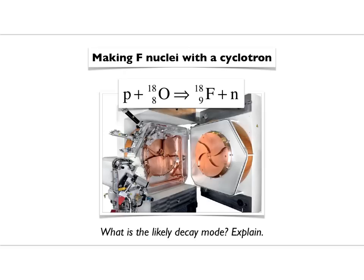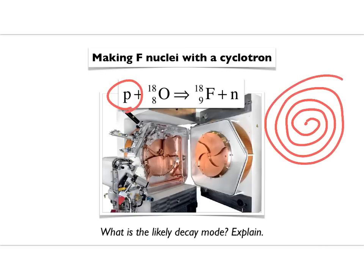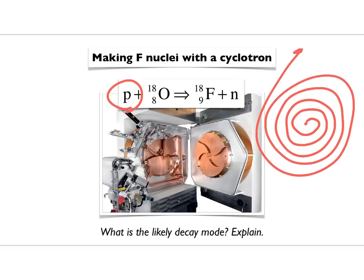We're going to make nuclei that are proton-rich by accelerating protons in a device called a cyclotron. In the cyclotron, you take a proton, accelerate it, keep it going in a circle with a strong magnetic field — faster and faster, bigger and bigger circles — and then it comes out at a very high speed. This is a picture of a cyclotron. You speed the particles up by giving them a kick each orbit until they reach a really, really high speed.